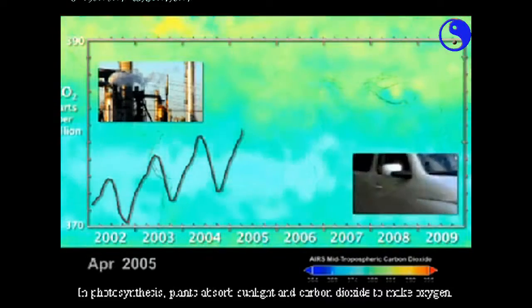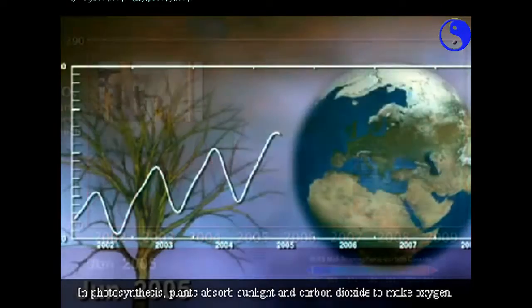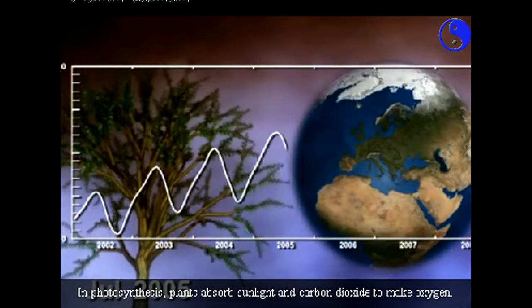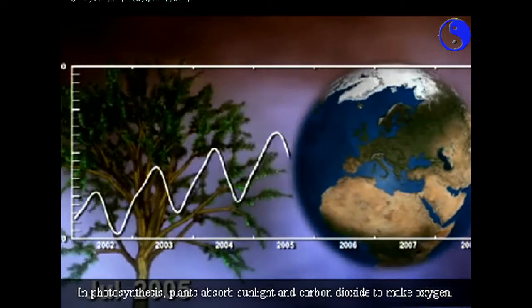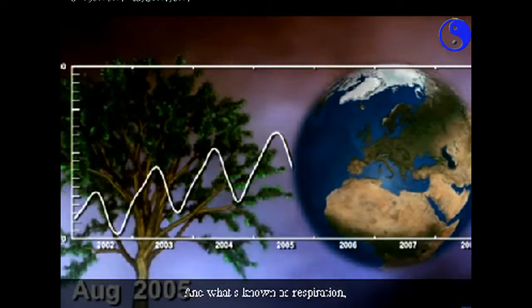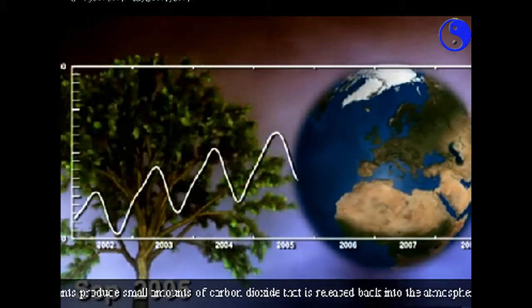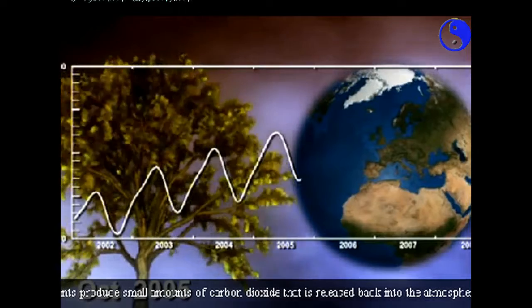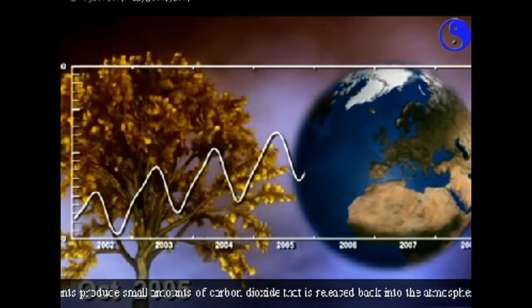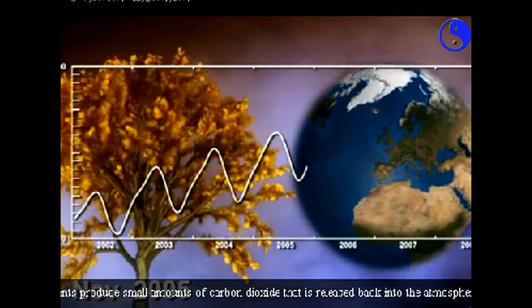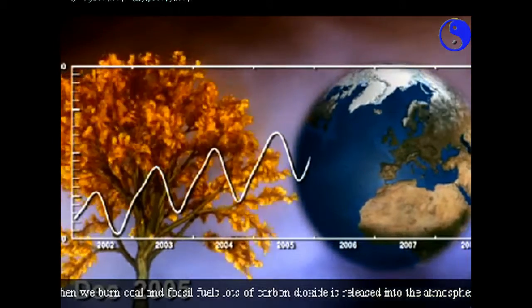In photosynthesis, plants absorb sunlight and carbon dioxide to make oxygen. And in what's known as respiration, plants produce small amounts of carbon dioxide that is released back into the atmosphere.